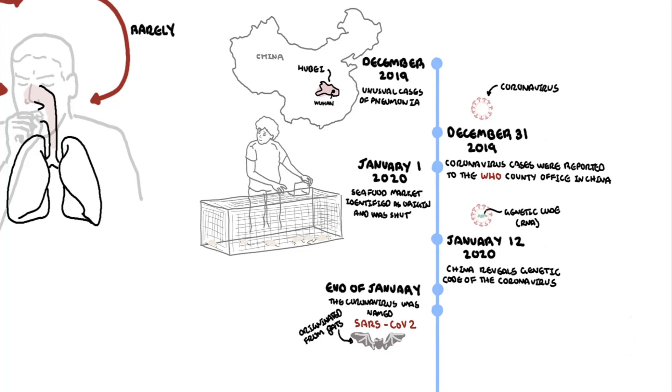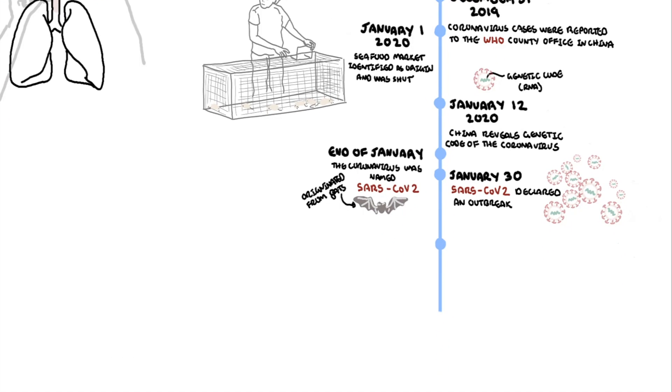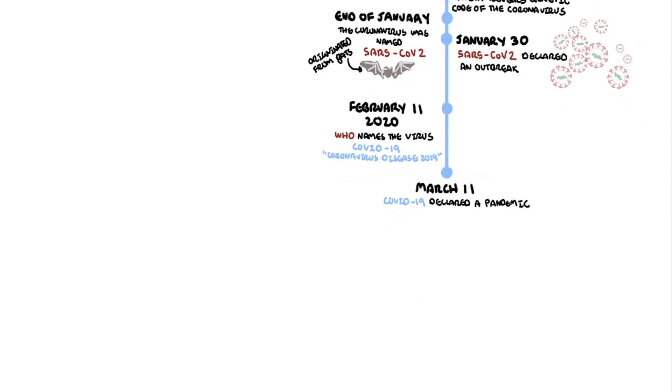By January 30th, the novel coronavirus outbreak was declared an emergency. On February the 11th, 2020, the World Health Organization announced that the official name of the disease would be COVID-19, a shortened version of coronavirus disease 2019. By March 11th, COVID-19 was declared a pandemic. A pandemic is a global outbreak of a disease, something not to be taken lightly.